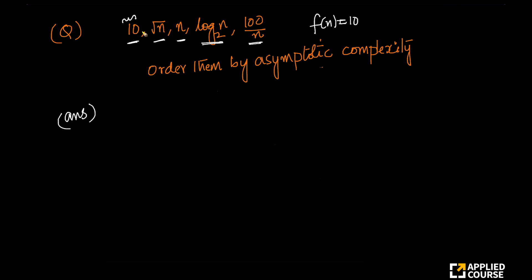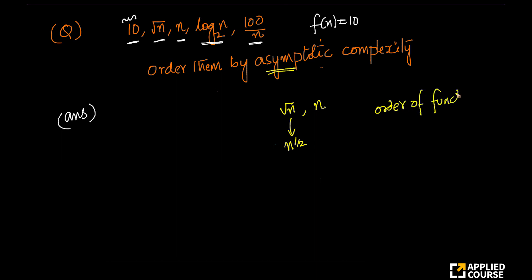Some things we already know here. For example, we already know that n grows faster than square root of n — square root of n is nothing but n to the power half. We already saw this in the order of functions.